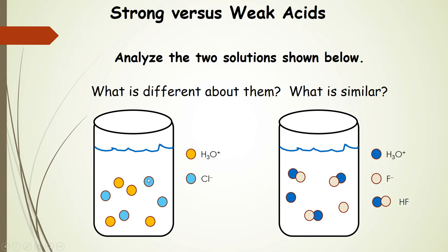You can see the key here. The yellow dots are hydronium ion, and the hashed blue dots are chloride anion. Looking over here, you have some molecules that are still stuck together — fluoride anion and then hydronium.